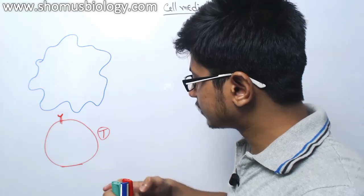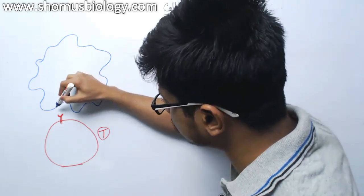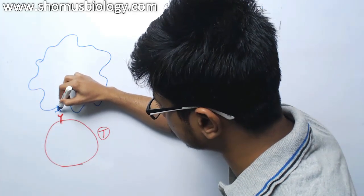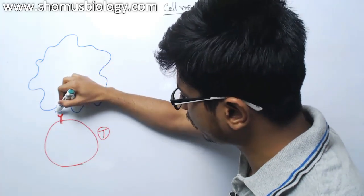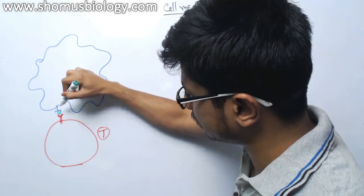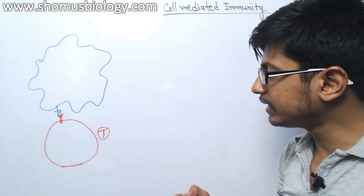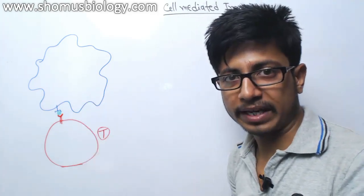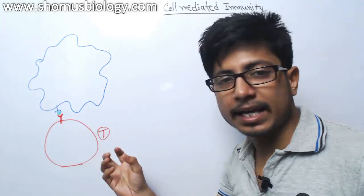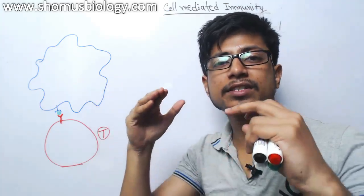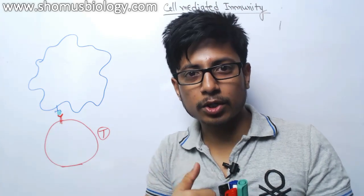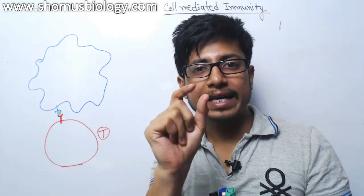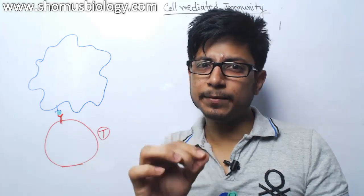Now it receives the signal from MHC 2 because this MHC 2 is attached with the antigen that is showcased by the macrophage. When they receive an engagement and interaction, this T-cell and macrophage has started cross-talk between themselves.